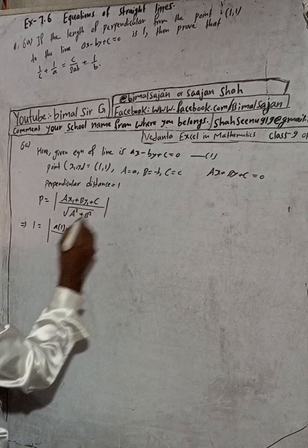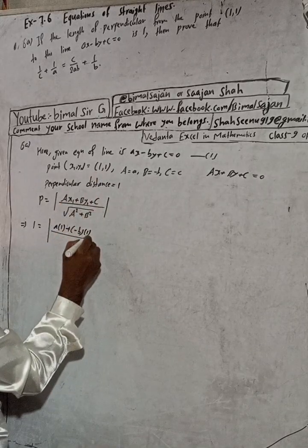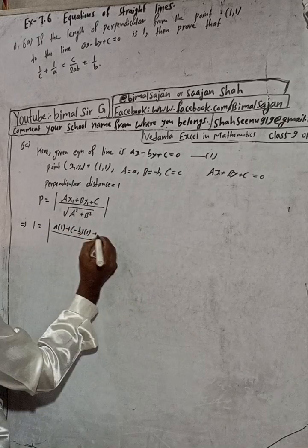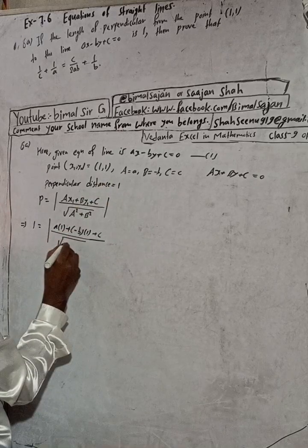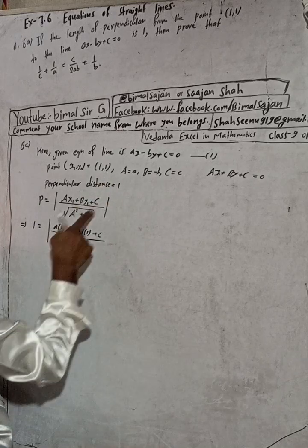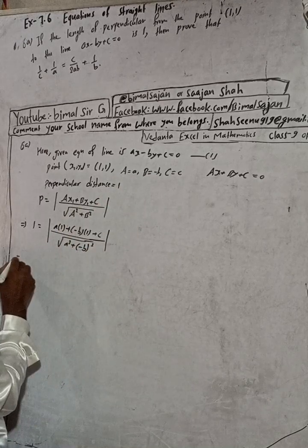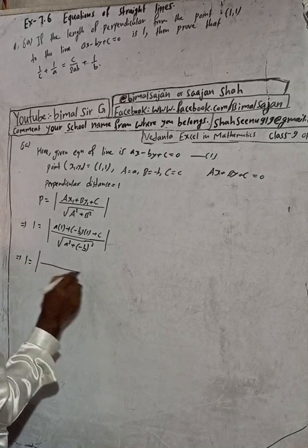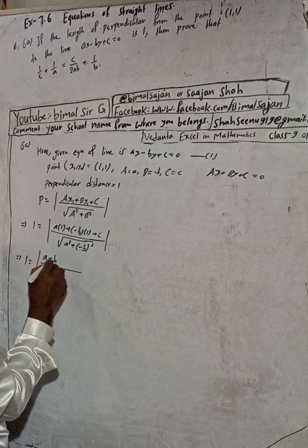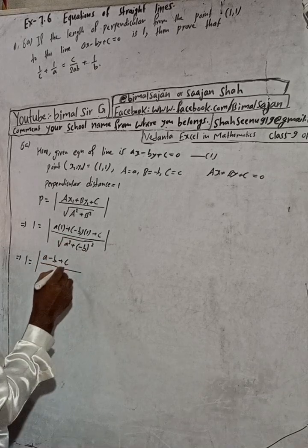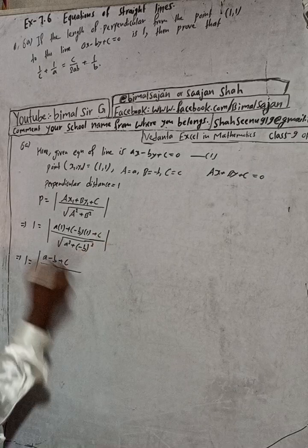Now substituting: A is small a, x₁ is 1; B value is minus b, y₁ is 1; C value is small c. In the denominator, A squared is a squared, and B squared — since B is minus b — minus b squared gives b squared. So we get: 1 equals (a minus b plus c) divided by root of (a² plus b²).